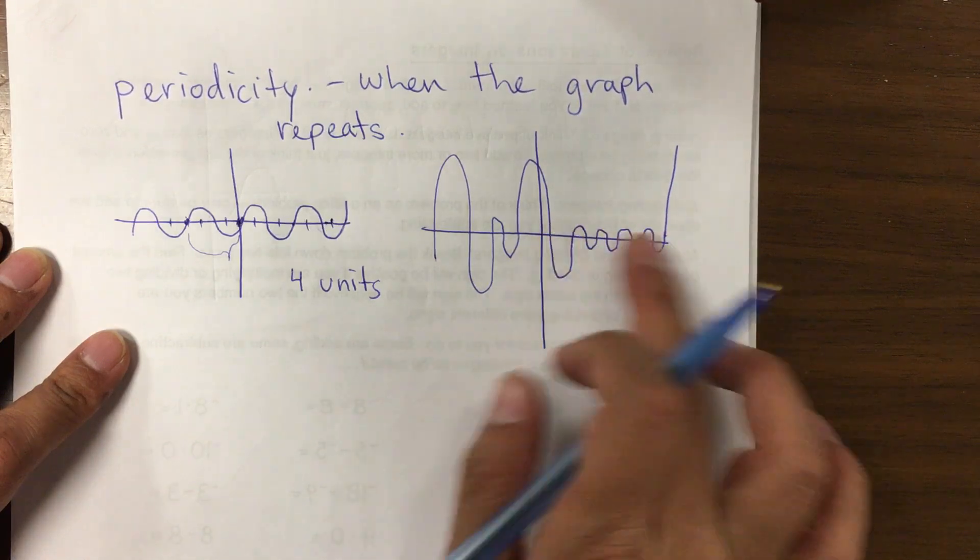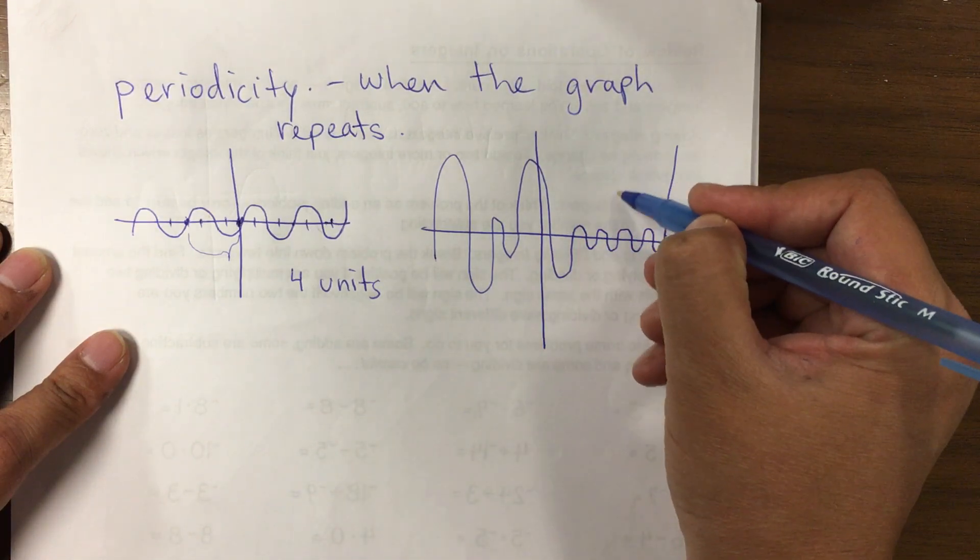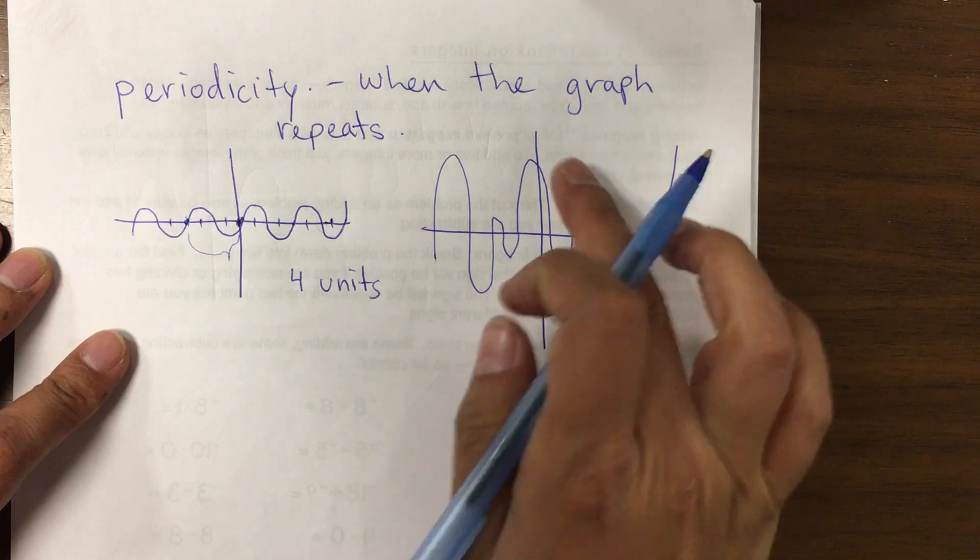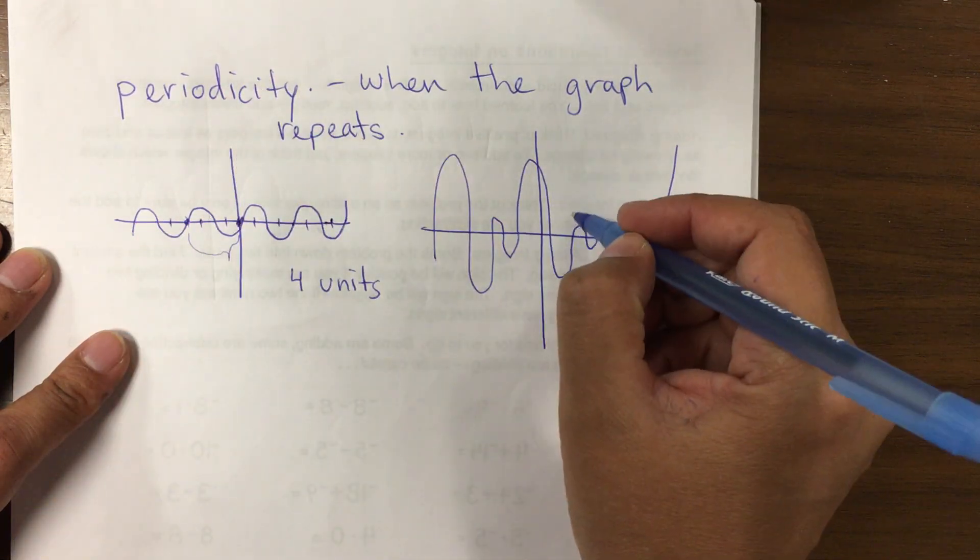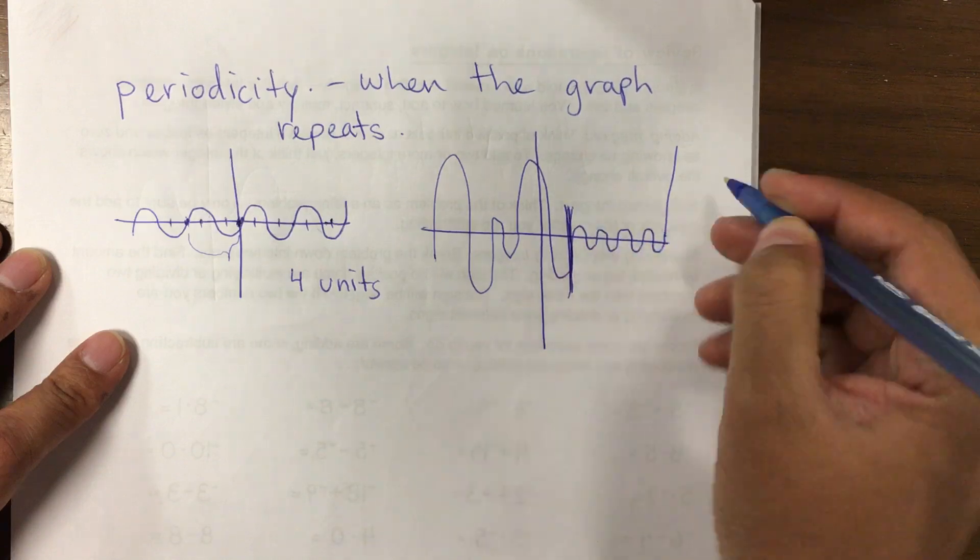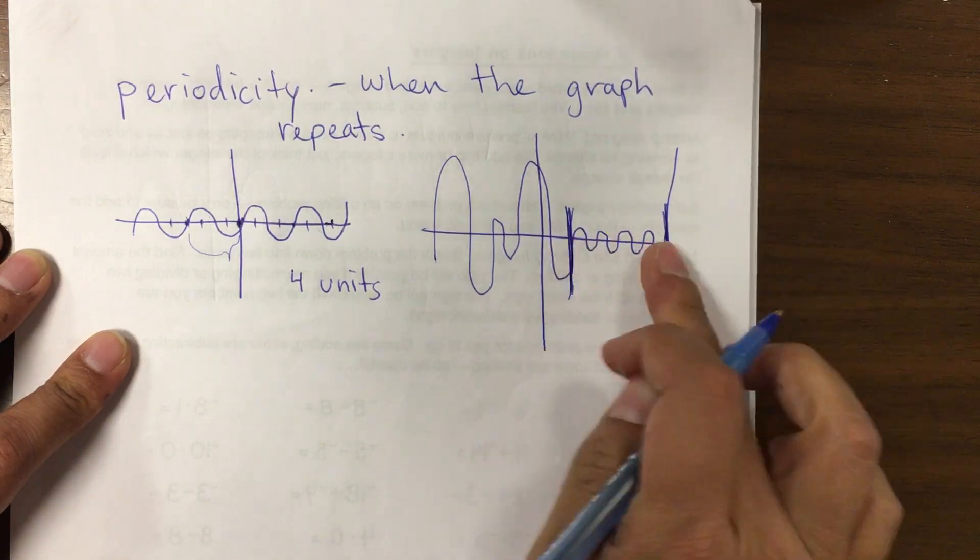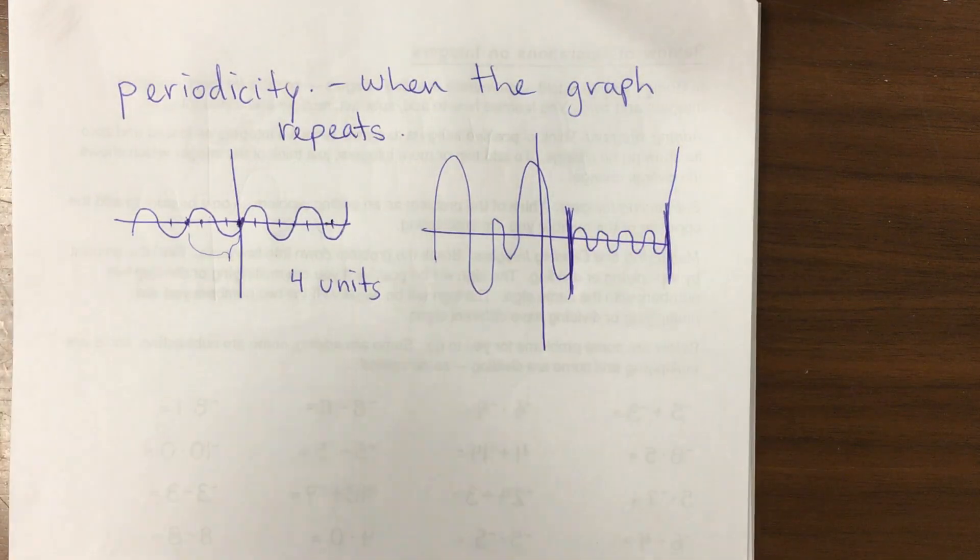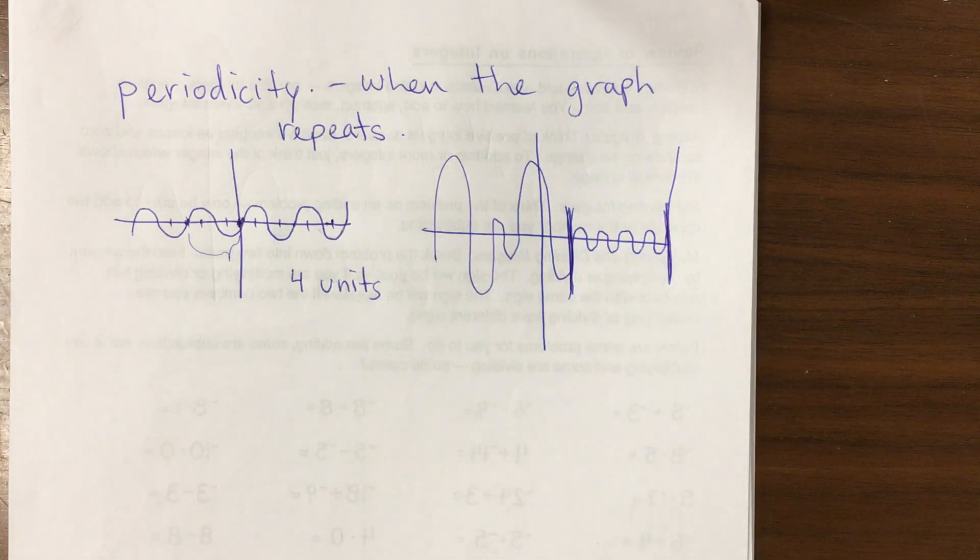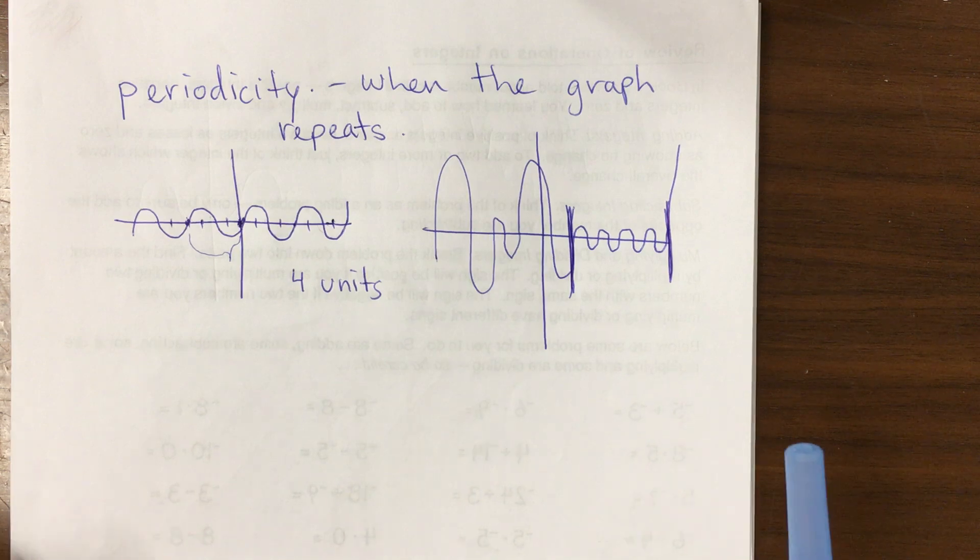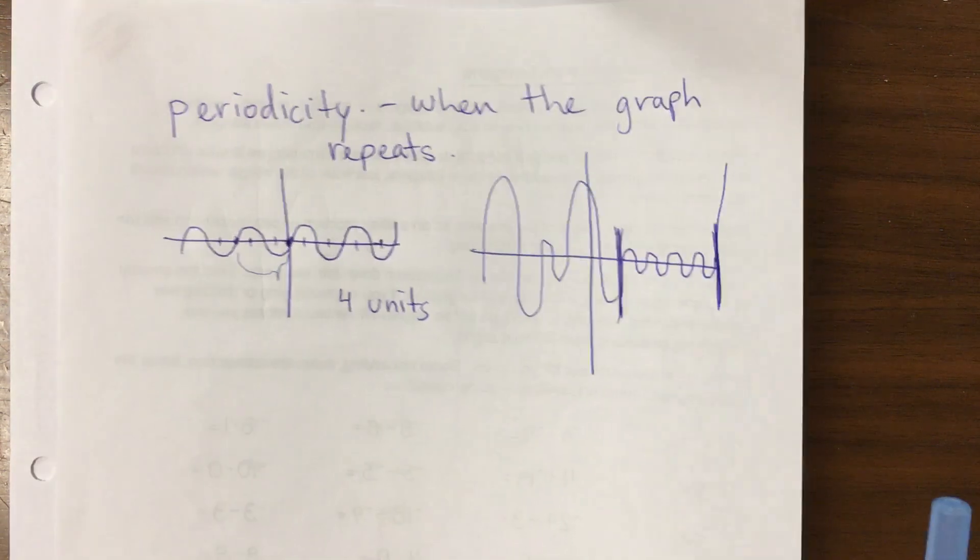It doesn't have to be exactly on the x-axis. Maybe the repetition takes place over here. So the graph can be periodic from maybe this section to this section. This area has periodicity. Take a minute to write that down.